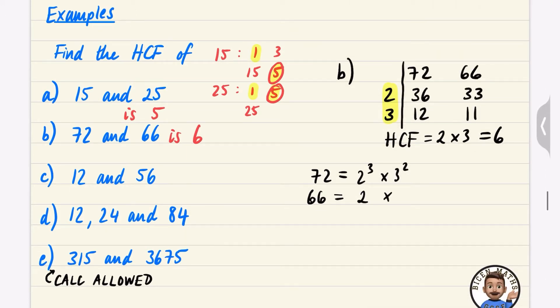We write out 72 = 2³ × 3² and 66 = 2 × 3 × 11. We look at each section separately and see which one loses — meaning which has the smaller power.